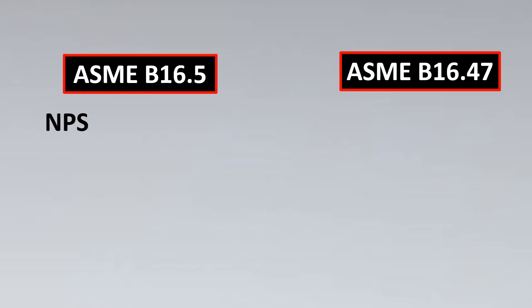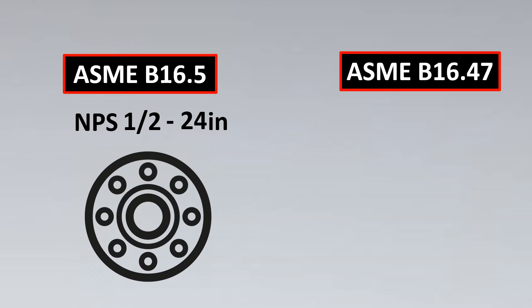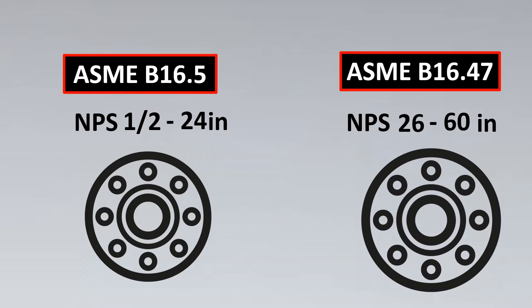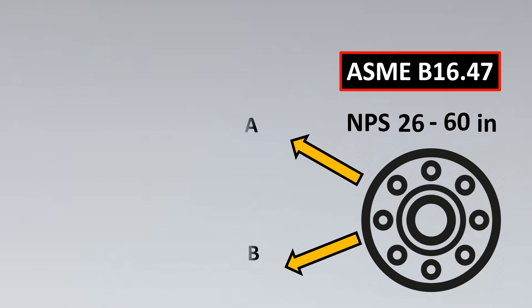ASME B16.5 covers NPS half inch to 24 inches, while ASME B16.47 covers 26 inches to 60 inches NPS. B16.47 is further divided into Series A flanges and Series B flanges.